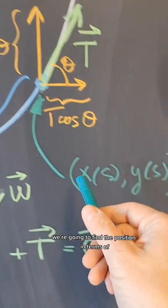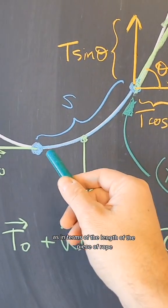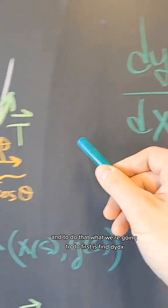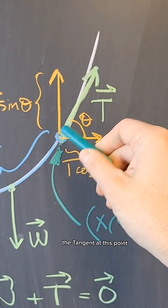We are going to find the position in terms of S, in terms of the length of the piece of rope. To do that, what we are going to do first is find dy/dx, the tangent at this point, the slope of this line.